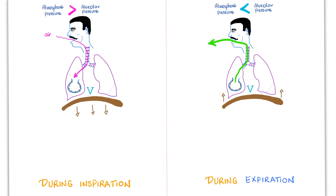During inspiration, the diaphragm is pulled downwards, creating a negative pressure in the alveoli, sucking air inside. During expiration, the diaphragm goes back to its normal position — going upwards — creating a positive pressure, so the pressure inside is greater than outside and air flows out.